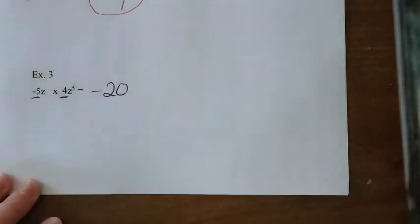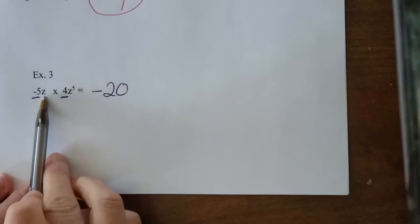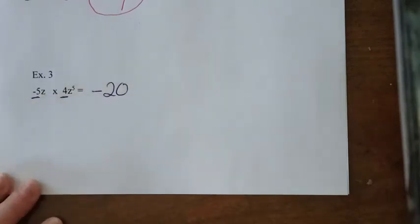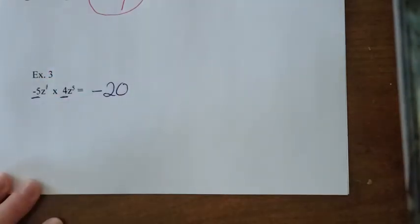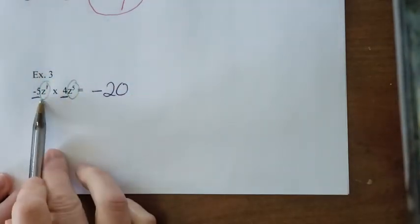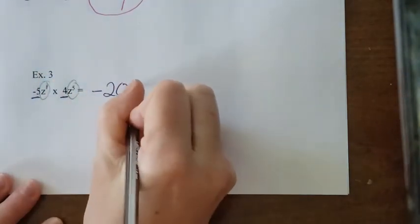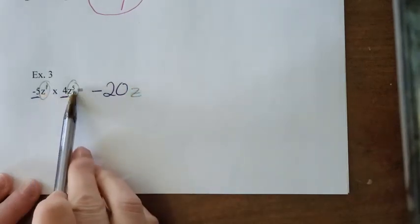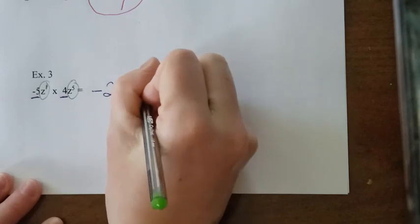Now when I look at my exponents, I have z, and there's no number up here. So when there's no number, we always assume in mathematics it's a 1. So z is the same thing as z to the power of 1. So now let's deal with that part. My base is z, so I write that down, and I have 1 plus 5 gives me 6.